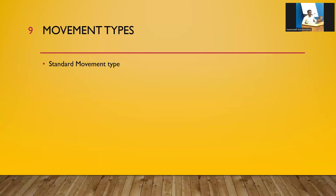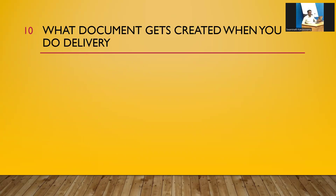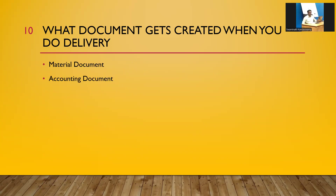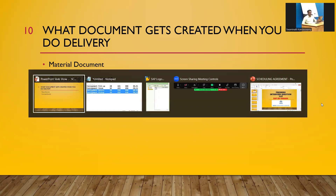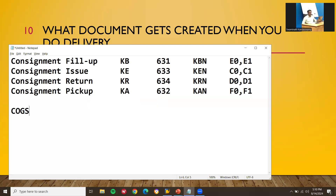Movement types: the standard movement type for Sales Order Delivery and Billing is 601. Returns movement type is 651. Consignment movement types were already discussed. Finally, when you do delivery, a Material Document and an Accounting Document get created. The Material Document is the delivery document; the Accounting Document involves Cost of Goods Sold (COGS) and stock. These are the major basics of SD interview questions — thank you.